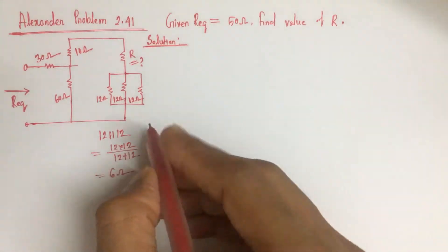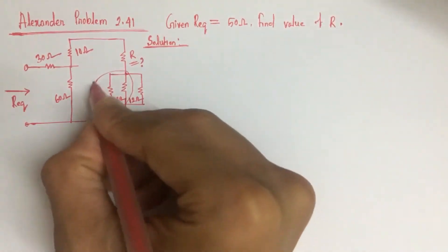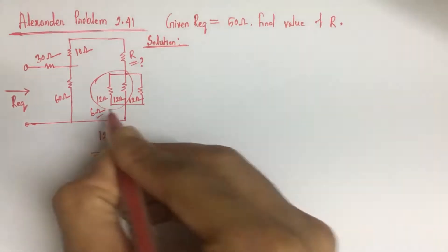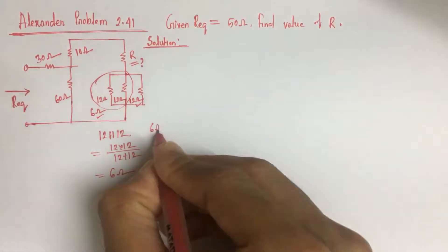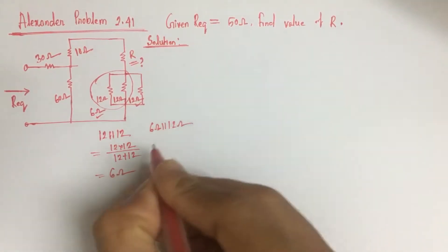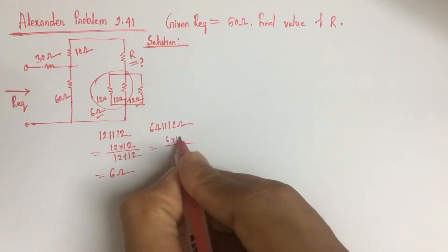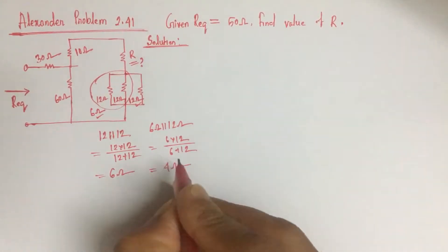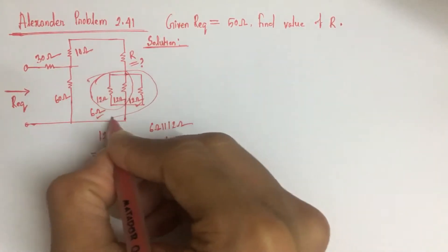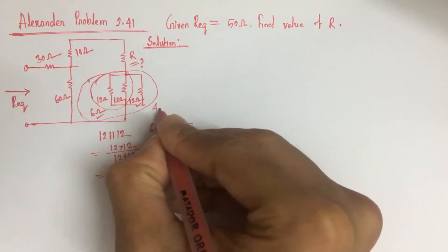Now this is 6 ohm. Now this 6 ohm is in parallel with this 12 ohm. Again, 6 ohm in parallel with 12 ohm can be replaced by a resistance of 4 ohm. The total resistance is 4 ohm.